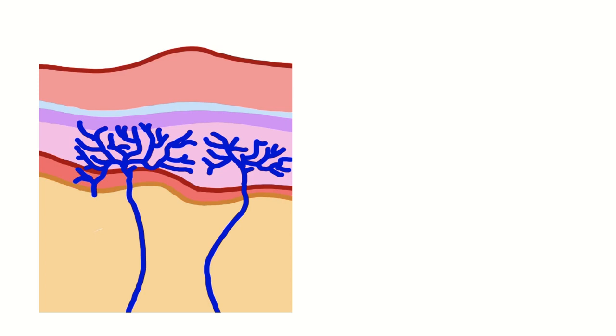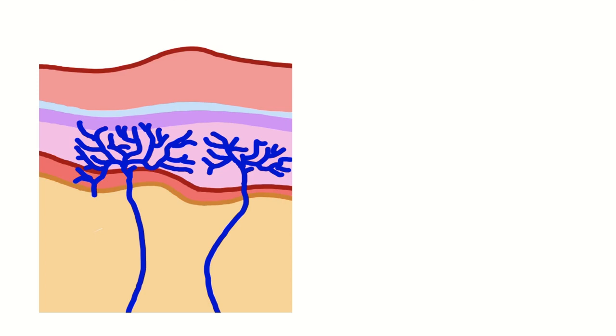To detect potentially harmful or actually harmful stimuli, we have receptors in our skin called nociceptors, which respond to high intensity stimuli. If you would now prick yourself with a needle—please don't actually do this—you would exert a strong mechanical force onto cells, as well as damage other cells.